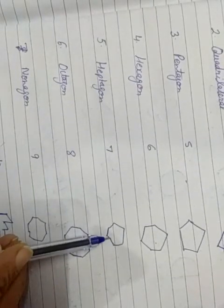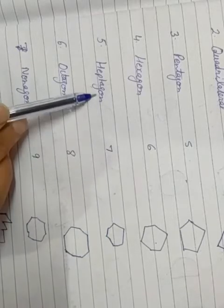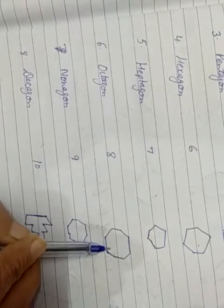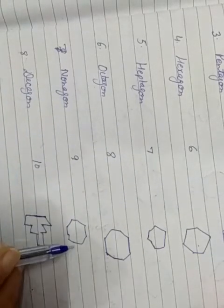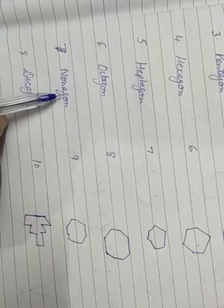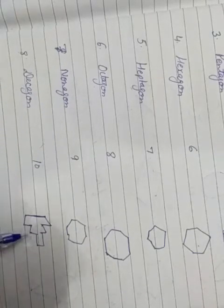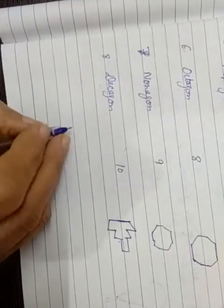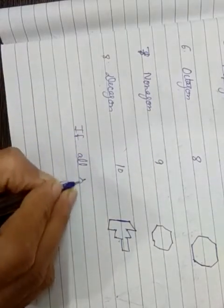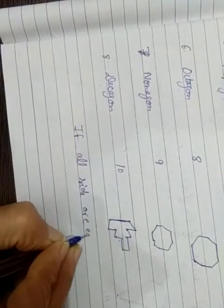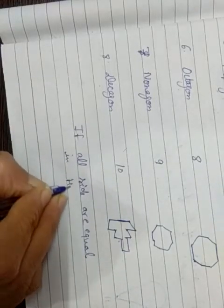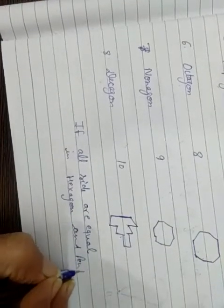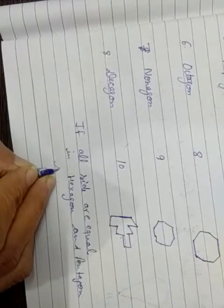If it has seven sides, this polygon is called a heptagon. If the number of sides is eight, the name of the polygon is octagon. If the number of sides is nine, the name is nonagon. If the number of sides is ten, the name of the polygon is decagon.